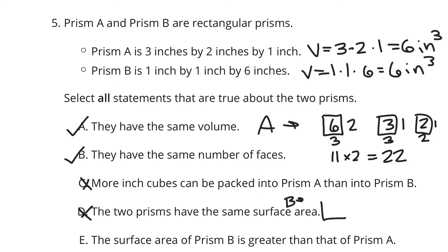What about B? Well, if you look here, you have a 1 by 1 side, a 1 by 6 side, and another 1 by 6 side. Well, that's 1, 6, and 6. You add those up, and you get 13, and 13 times 2 is 26, and so they're not the same. E, the surface area of prism B is greater than that of A. Well, we just calculated 26 is bigger than 22, so that is true.